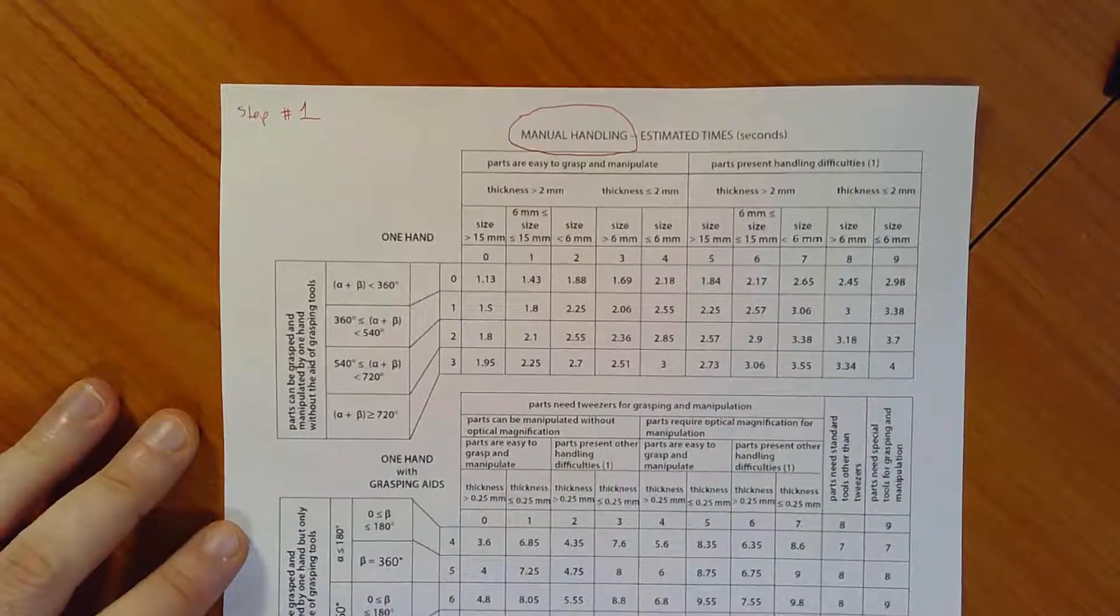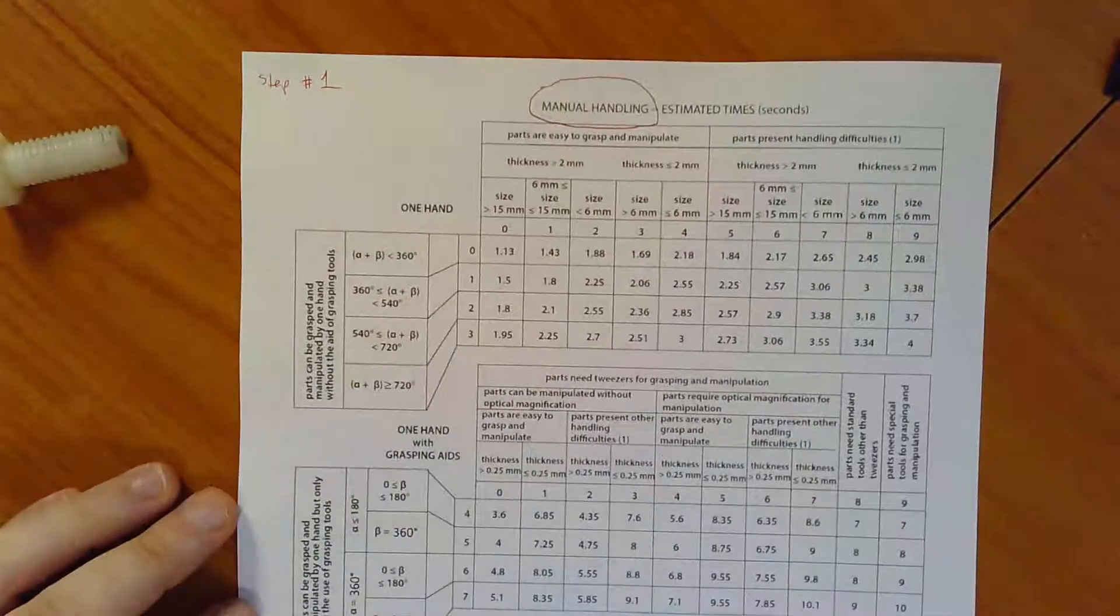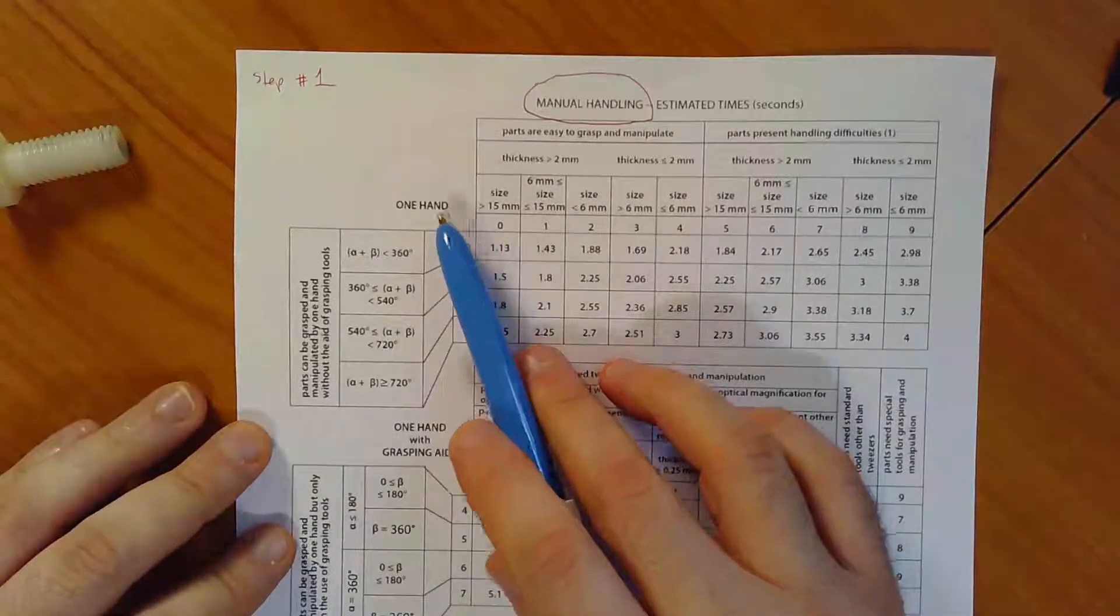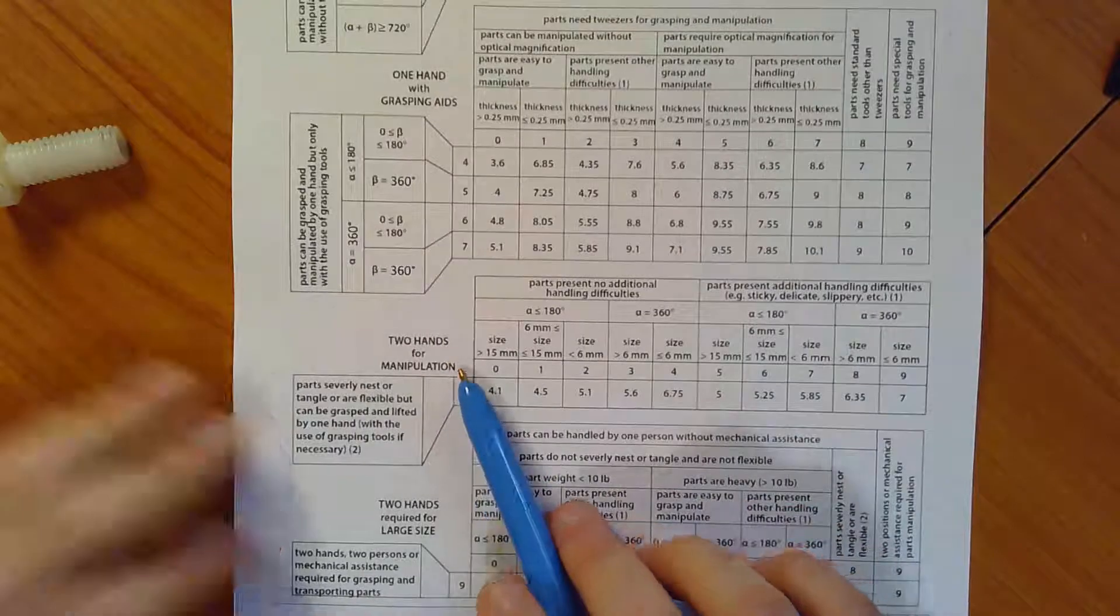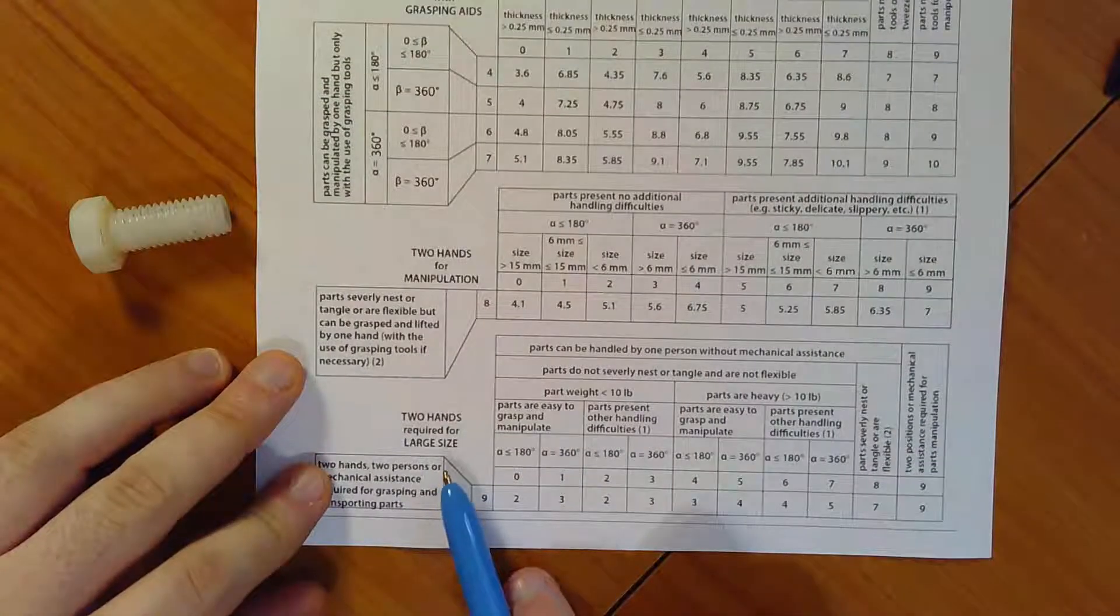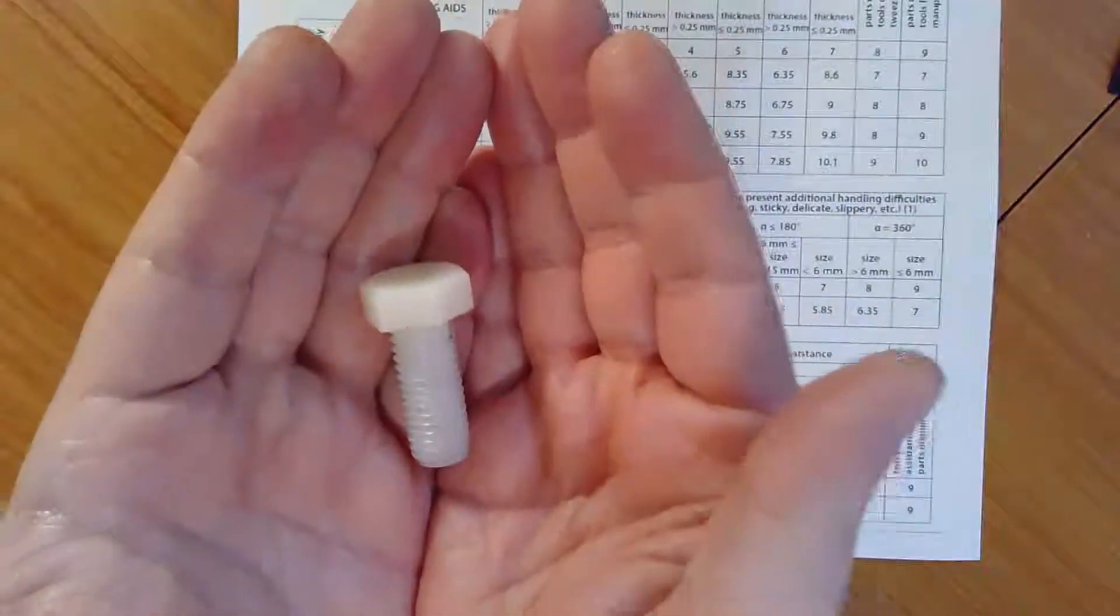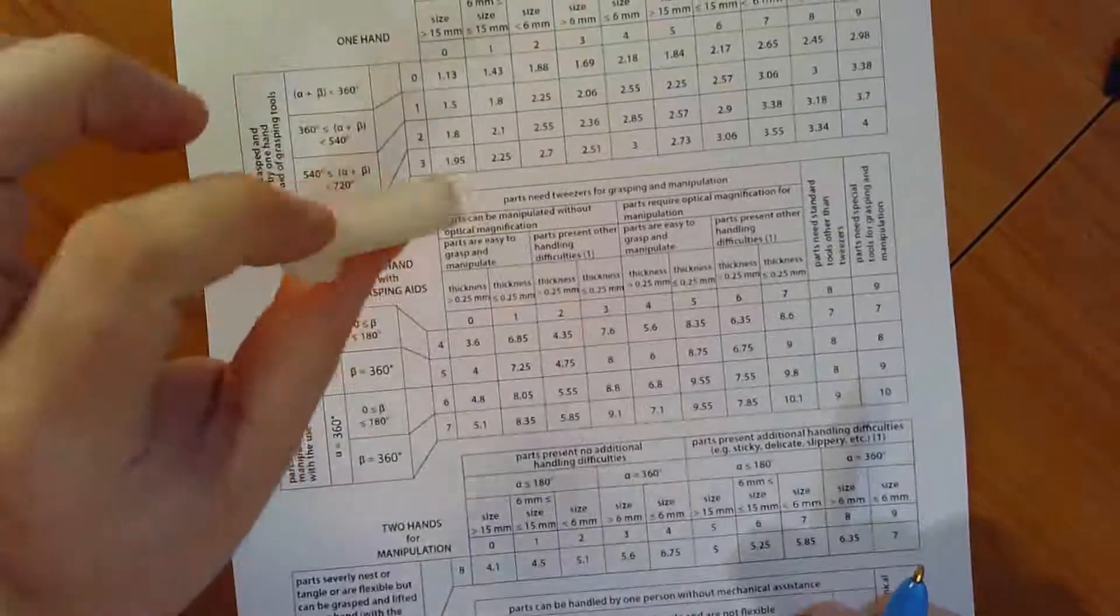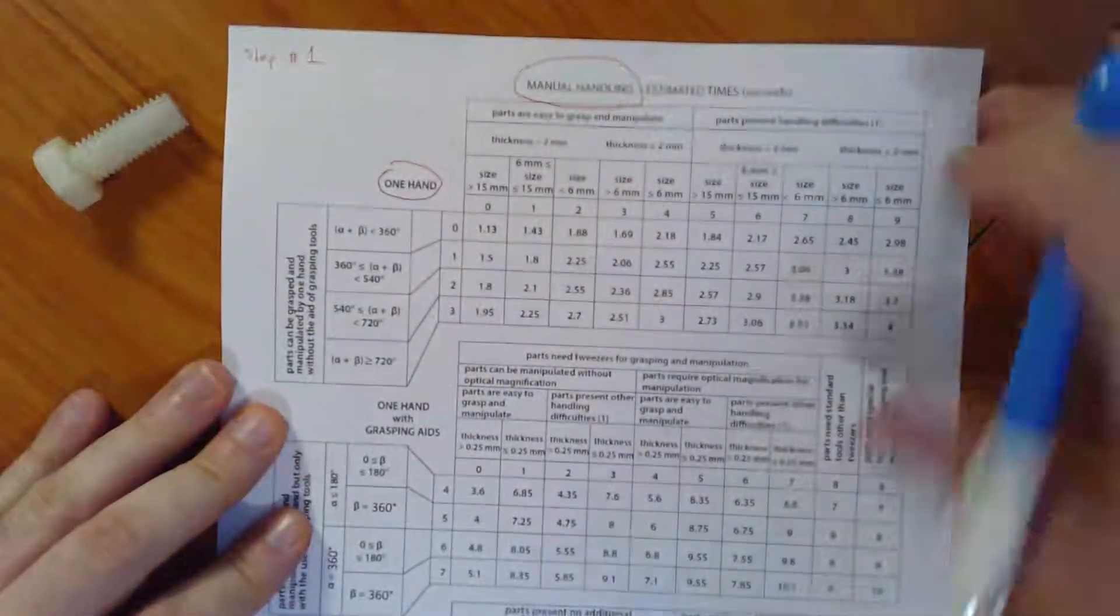So once I've got manual handling for step number one, the first thing that I have to decide is how many hands I'm using to do that process of grabbing this part and whether I need a special tool or not. So I've got the option of just picking it up with one hand. I can do one hand with a grasping aid. I can do two hands required for manipulation because maybe this part is big enough that I need two hands to turn it. And then three is two hands are required for large size. The part is just so big, so heavy, so unwieldy that you need to pick it up with two hands because it's so heavy.